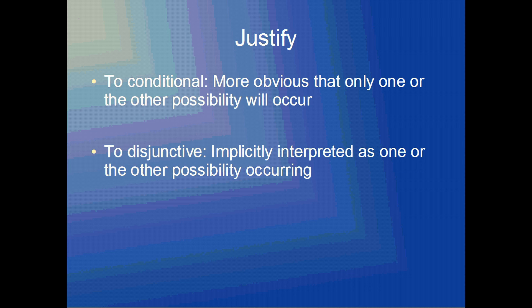In terms of the benefit of converting a conjunctive syllogism to a disjunctive syllogism, I think generally we implicitly interpret a disjunctive syllogism such that only one possibility or another will occur. I think that's more obvious in a disjunctive syllogism than a conjunctive syllogism, and I will demonstrate that right now.